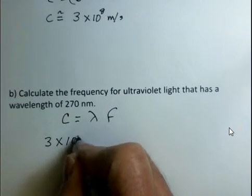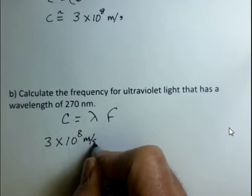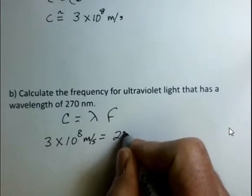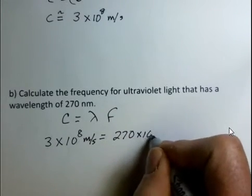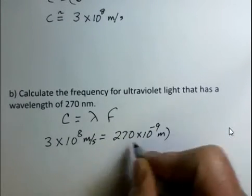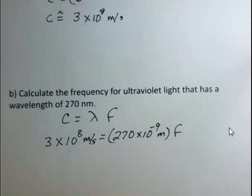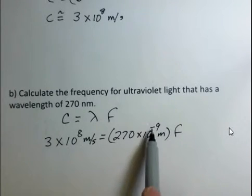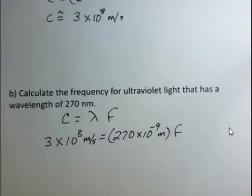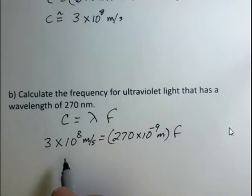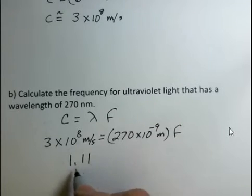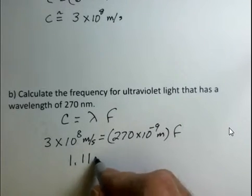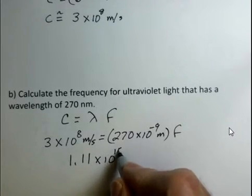3 times 10 to the 8th meters per second. We're given the wavelength 270, 10 to the minus 9 meters. We want to calculate the frequency, so we have to divide both sides. 3 times 10 to the 8th divided by 270 times 10 to the minus 9. Make sure you get a minus on that exponent in your calculator. When you divide these two numbers, you get 1.11 times 10 to the 15th hertz.